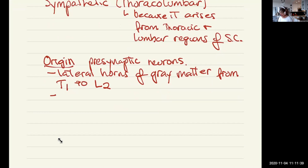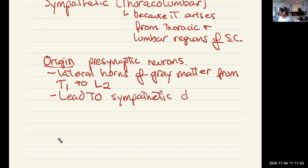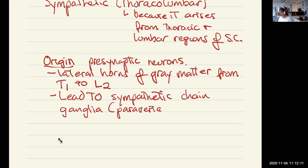This leads to what is known as a sympathetic chain ganglia — a chain of ganglia that is directly beside the vertebral column. Because of that, it's also known as paravertebral, meaning beside the vertebrae.